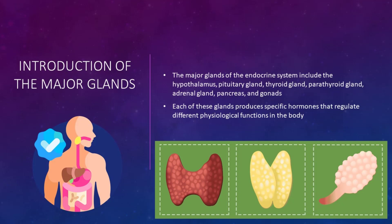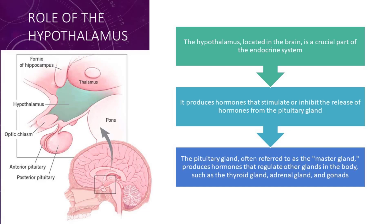Introduction of the major glands. The major glands of the endocrine system include the hypothalamus, pituitary gland, thyroid gland, parathyroid gland, adrenal gland, pancreas, and gonads. Each of these glands produces specific hormones that regulate different physiological functions in the body.